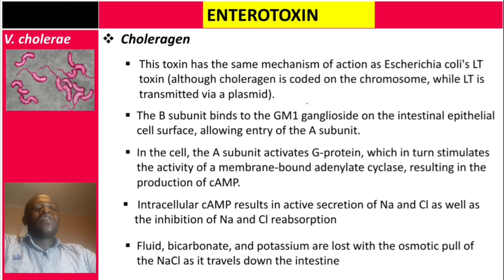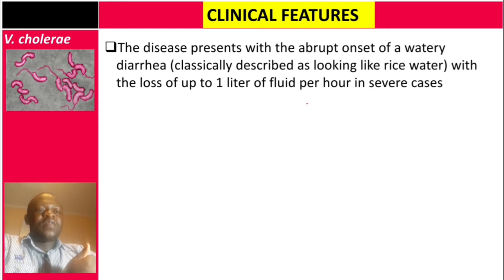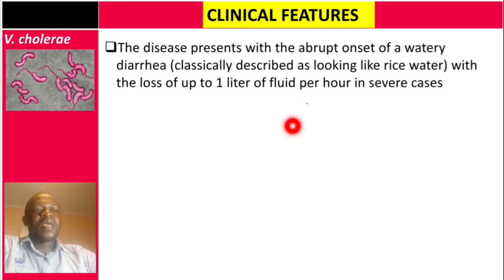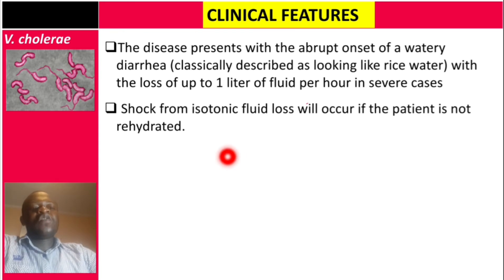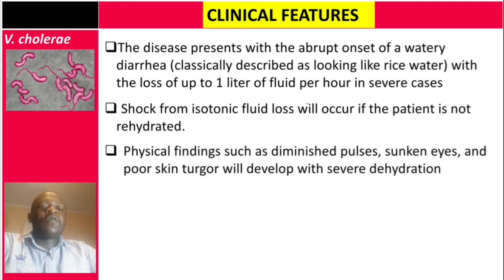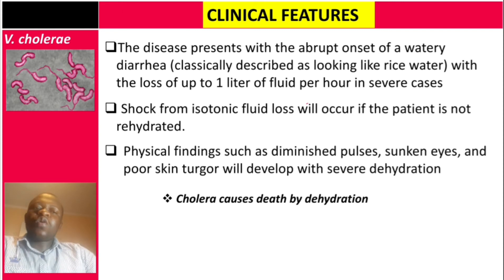The disease presents with abrupt onset of watery diarrhea, classically described as looking like rice water, with loss of up to one liter of fluid per hour in severe cases. Shock from isotonic fluid loss will occur if the patient is not rehydrated. Physical findings such as diminished pulses, sunken eyes, and poor skin turgor develop with severe dehydration. Cholera causes death by dehydration.